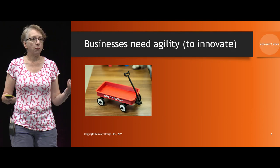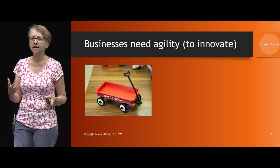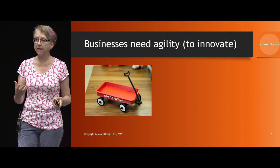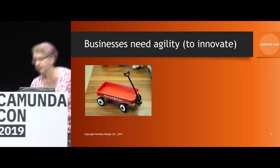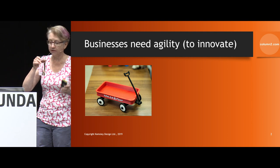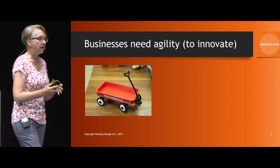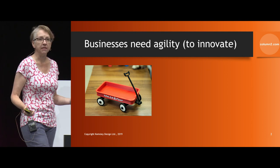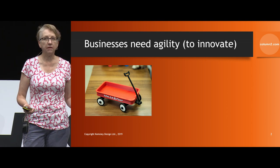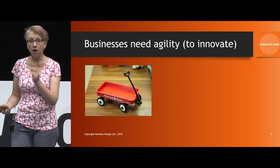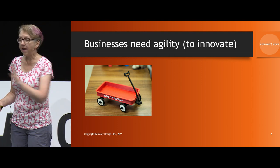I wanted to start with a couple of the imperatives that business has — things they need from IT, whether internal or outsourced. The first thing businesses need from their technology is agility, and they need agility in order to innovate. Without technological agility you cannot innovate your business models to provide different kinds of products and services.